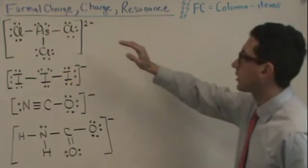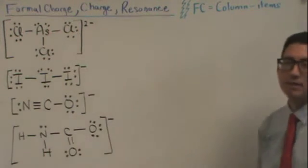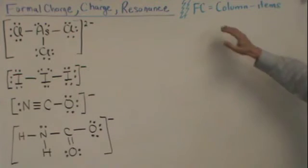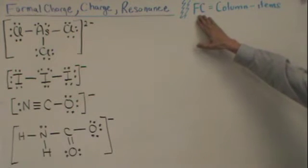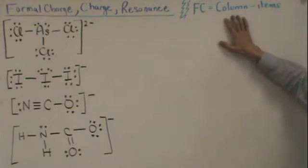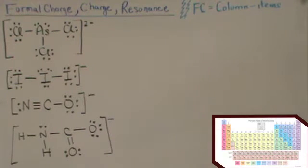Now, what's new for us is formal charge, and we're going to go through all of these and figure out the formal charges. Formal charge is going to equal the column number in the periodic table minus the number of items around that molecule.